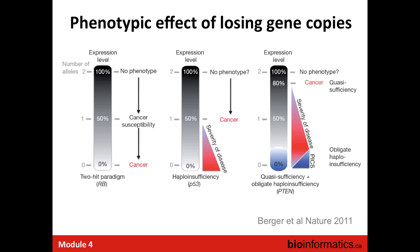Just to finish talking about tumor suppressor genes: we've gone over the classic two-hit hypothesis where both copies of a tumor suppressor gene must be inactivated before a pathogenic phenotype is observed. To complete the picture, we can also have haploinsufficiency, where you only need to lose one allele of the gene to initiate oncogenesis—losing the other allele simply increases the severity of the disease. And in some cases we have quasi-insufficiency, where even a small decrease in expression results in a phenotype, but where the tumor cell cannot tolerate the full loss of the gene because of a necessary interaction between the wild-type and mutant allele. So there are different patterns of tumor suppressor loss.